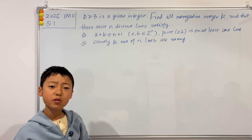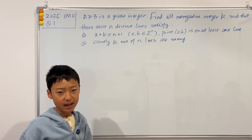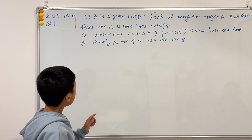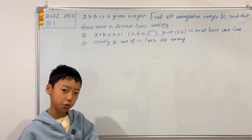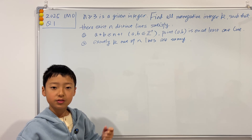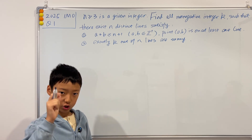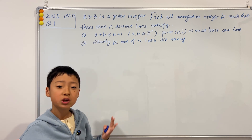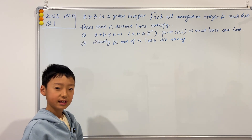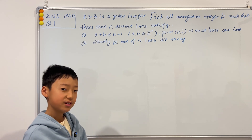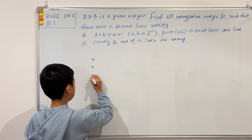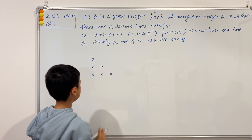Why don't we first try out a few simple values of n, like the simplest value, n equals 3? We see that a plus b is less than or equal to 4. Since a and b are positive integers, these sets of dots must be in quadrant 1. If you try this on your own, you see that for n equals 3, the dots will be in a triangle shape: 1, 2, 3 dots on successive rows.